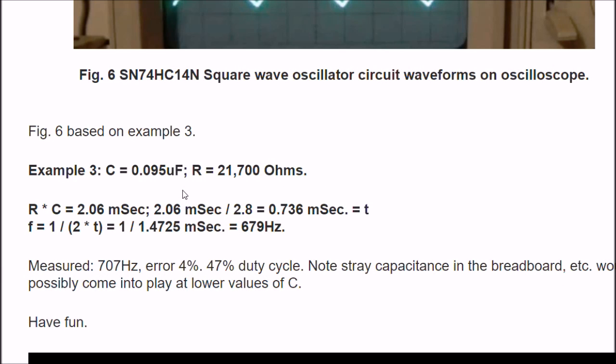Alright, example problem number 3. The capacitor is a 0.1 microfarad capacitor that really measured out to 0.095 microfarads. It's pretty close. And I'm using the same 21,700 ohm resistor. R times C gives me 2.06 milliseconds. 2.06 milliseconds divided by 2.8 is 0.0736 milliseconds, or you could say 736 microseconds. That's my value of T.